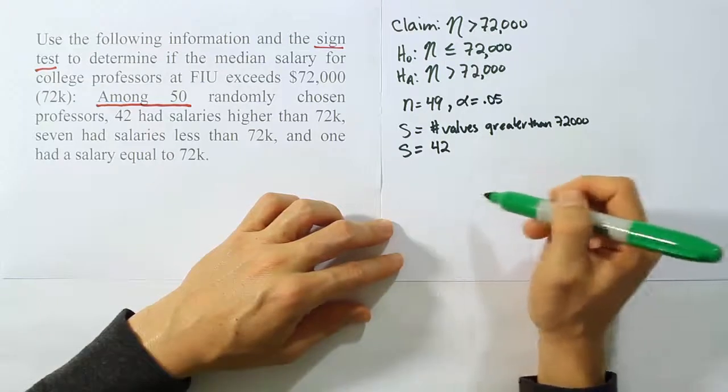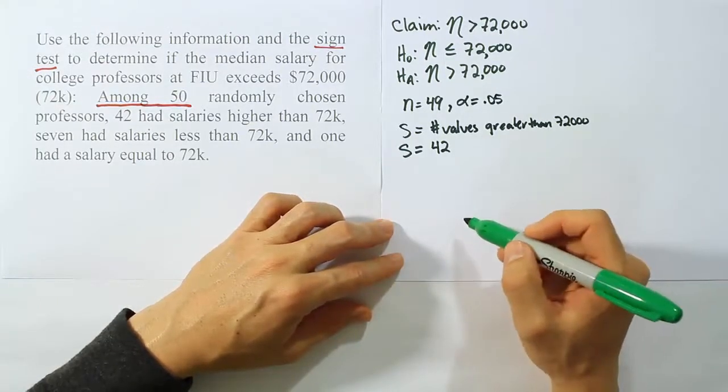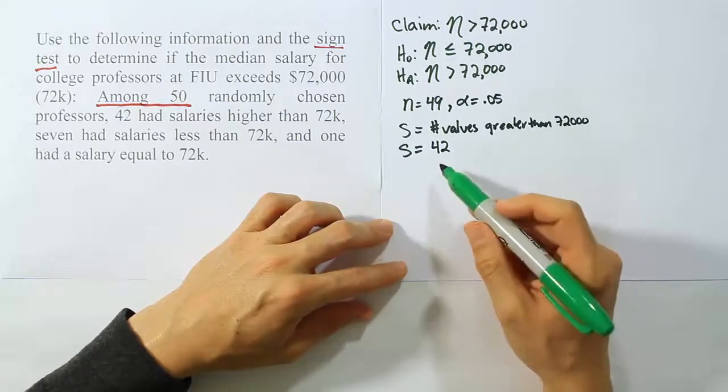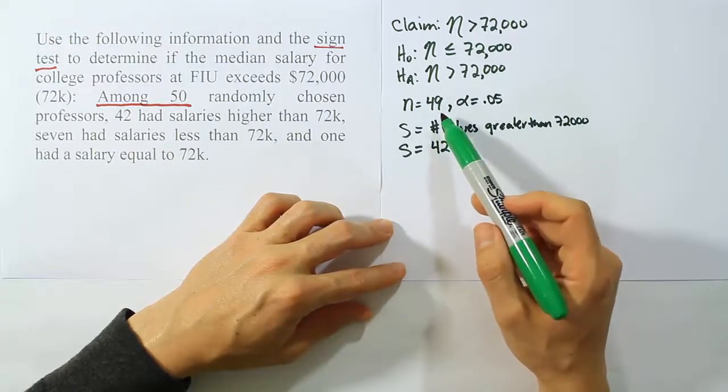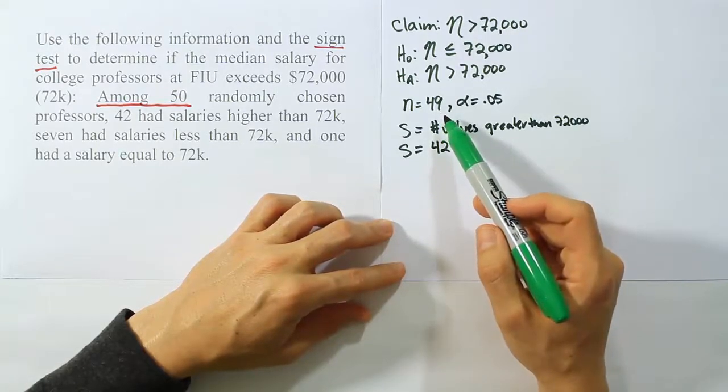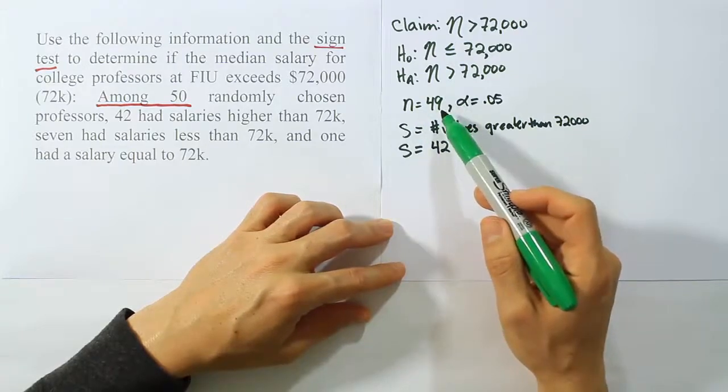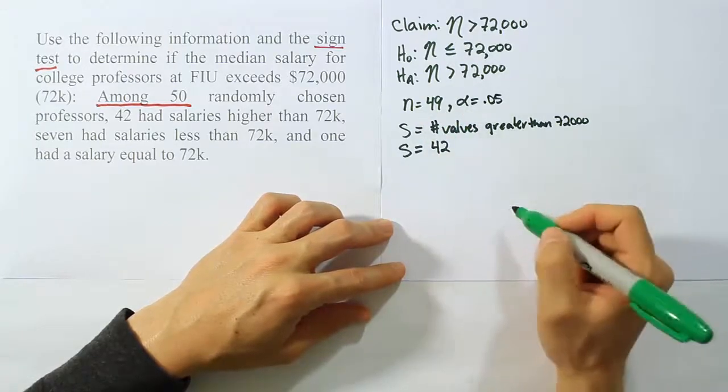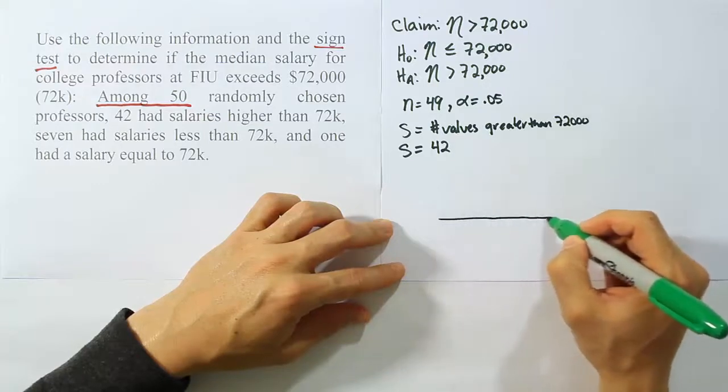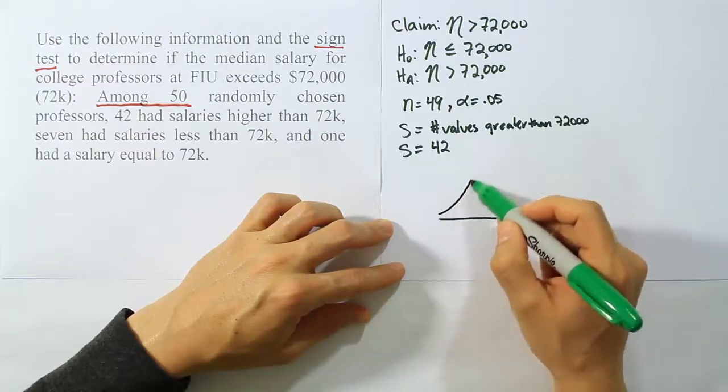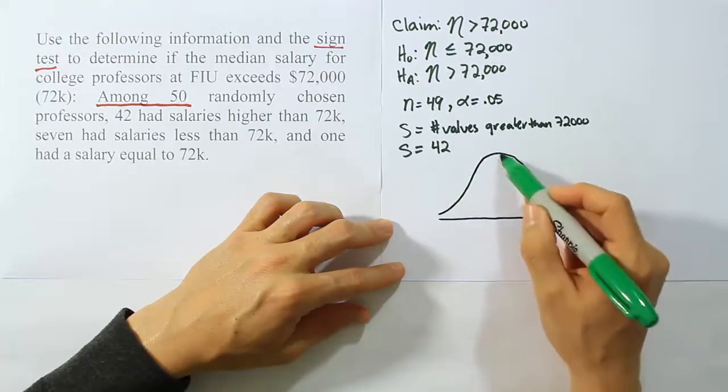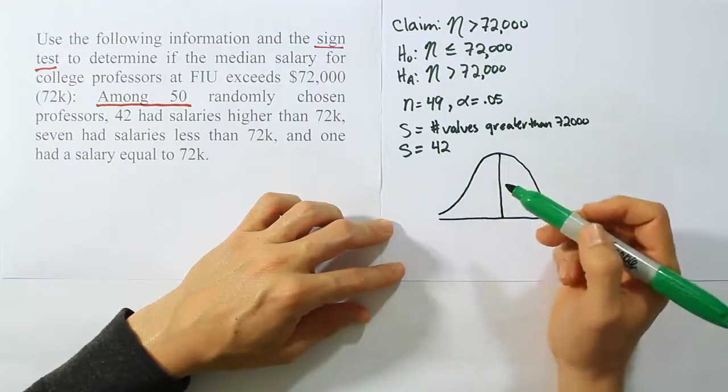This is just following the normal procedure for the sign test. For the p-value here, it's not going to be easy to go to the table since N is 49. It's too big. The tables don't have that value. And when we ran into that situation in the past, we used the normal approximation. What that means is we're going to use a bell curve. And when we use the bell curve, we're going to need to know what the mean is.